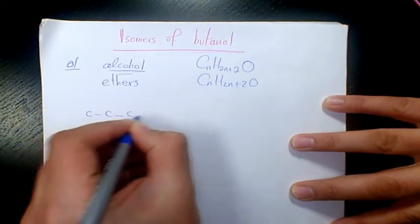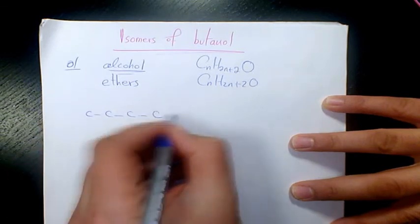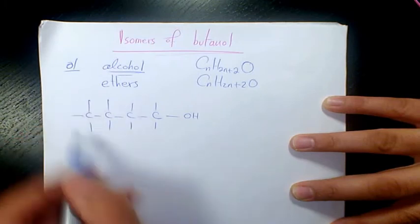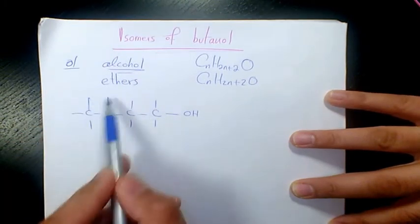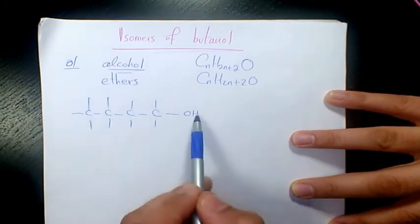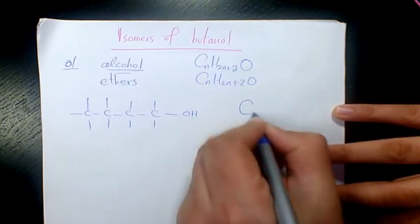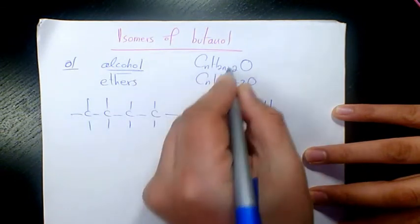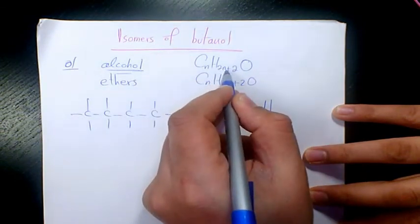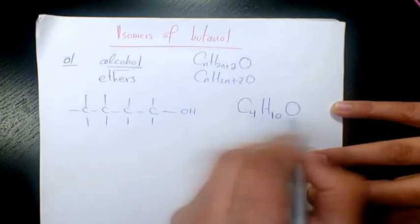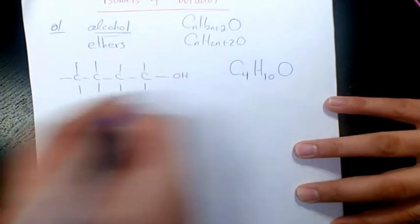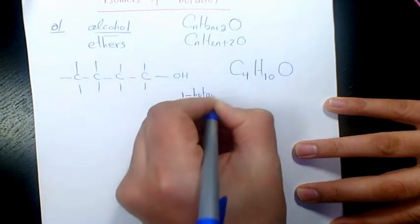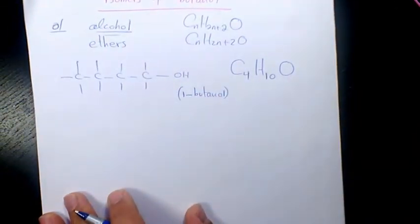First of all, we can have four carbons in a row and we have OH like that. These are all hydrogen: 1, 2, 3, 4, 5, 6, 7, 8, 9, 10, which makes sense because here we have C4. When you substitute here, it's going to be 2 times 4, 8, plus 2 is going to be 10. So that makes sense. So what is it called? It's called 1-butanol.